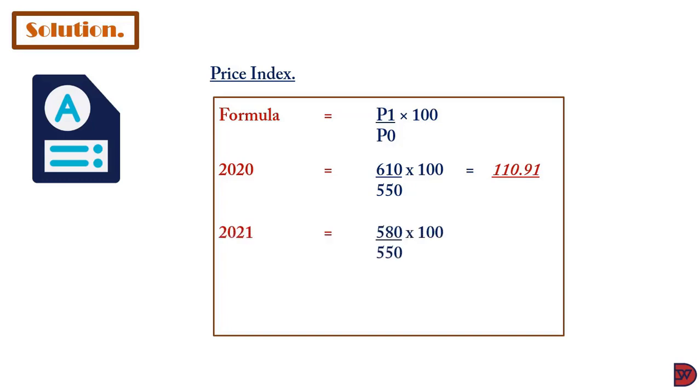For 2021, the price was 580 divided by 550, multiplied by 100, giving a price index of 105.45. For 2022, the price is 630 divided by 550, multiplied by 100, giving 114.55.